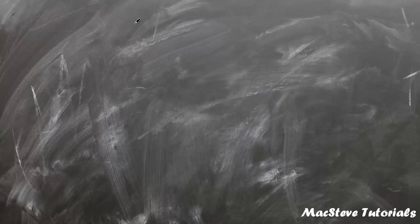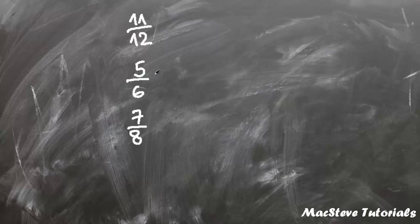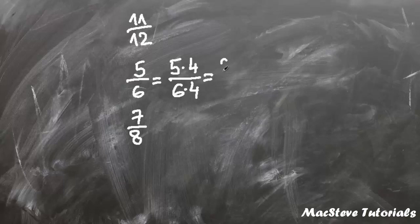In this example we will compare 11 over 12, 5 over 6, and 7 over 8. 24 is the least common multiple for 6, 8, and 12. First we must multiply 5 over 6 by 4 and we get 5 times 4 over 6 times 4, which is 20 over 24.